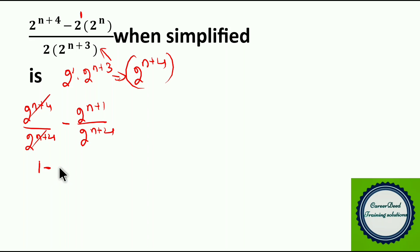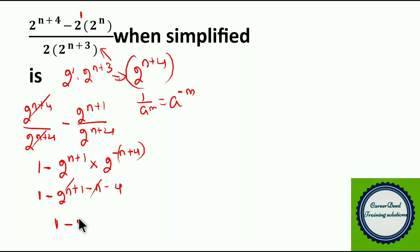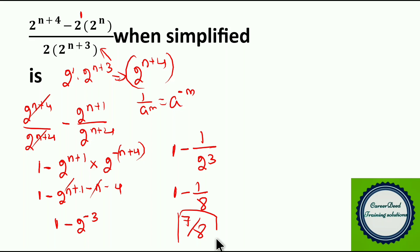So you are left with 1 minus 2 power (n plus 1). Now this is in the format of a power m, so 1 by a power m can be written as a power minus m. You can bring this to the numerator and write 2 power (minus n plus 4) minus 2 power (n plus 1 minus n minus 4). The plus n and minus n cancel, leaving 1 minus 2 power (1 minus 4), which is minus 3. So you get 1 minus 1 by 2 power 3, which is 1 minus 1 by 8, giving 7 by 8. The answer for this question is 7 by 8.